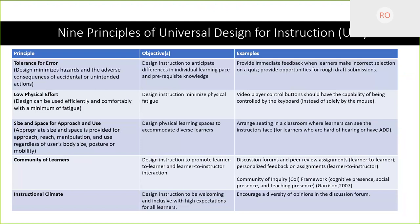The last main principle of universal design is size and space for approach and use. It's primarily meant for physical spaces — we want to design classrooms to accommodate diverse learners. In a face-to-face class, you may want to arrange seats so students can see your mouth, because students who are hard of hearing or have attention deficit disorder need to actually see your face in order to focus and understand the content.